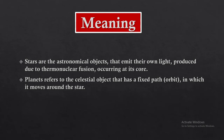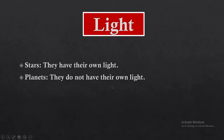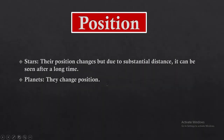Sun, moon, stars, and planets are all celestial objects — heavenly objects. The next difference is light: stars have their own light, whereas planets do not have their own light.